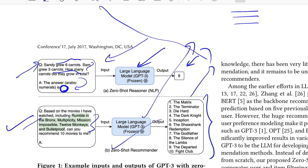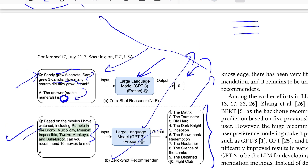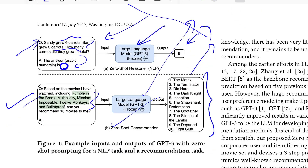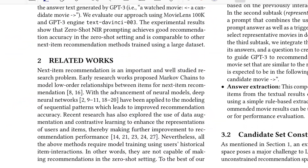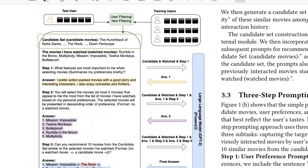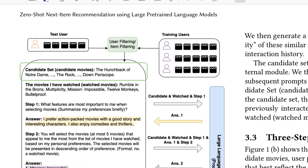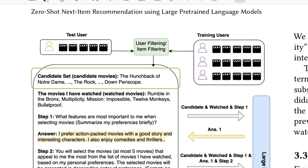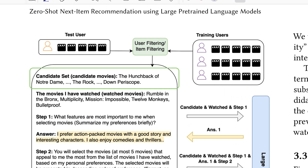In this paper, the authors propose a principled approach where they break down the entire LLM-based recommendation system into a three-step prompting strategy. They have a pretty good figure that explains all of it, so let's go through it one by one.